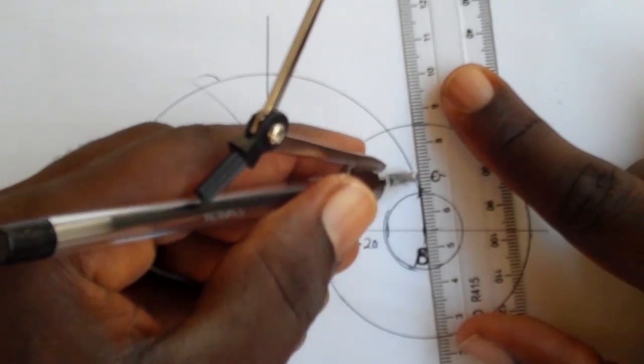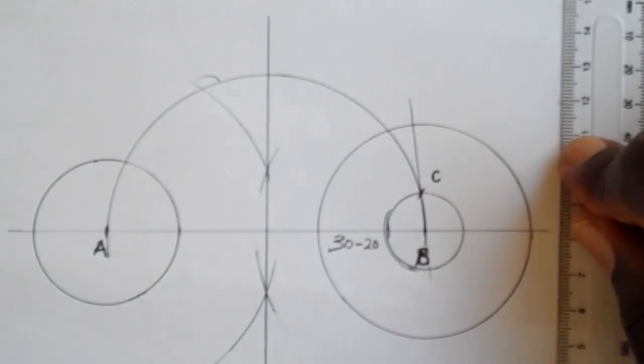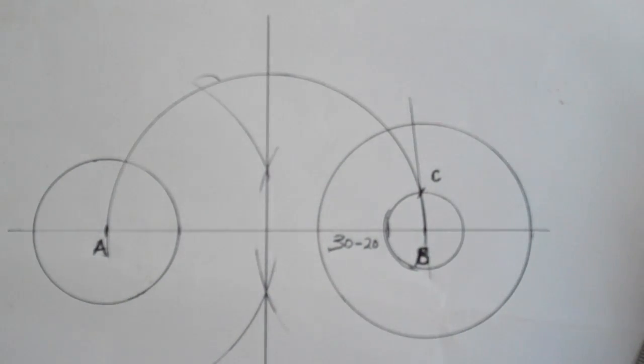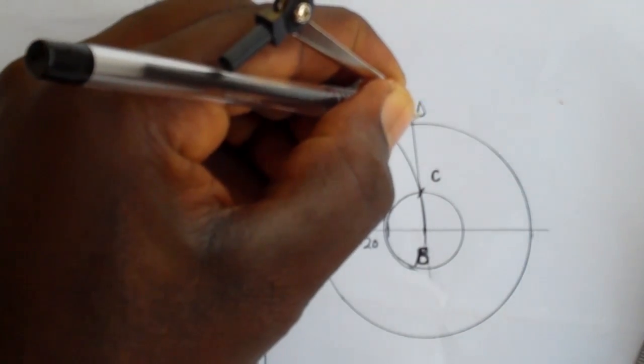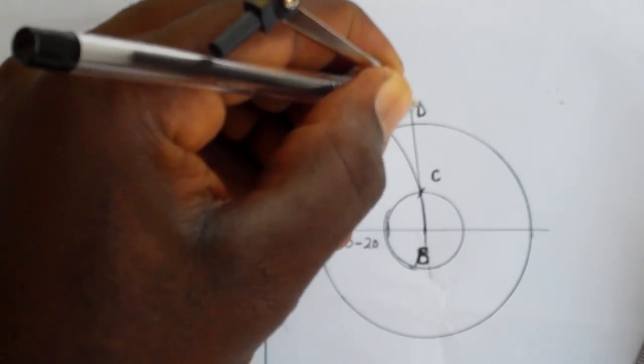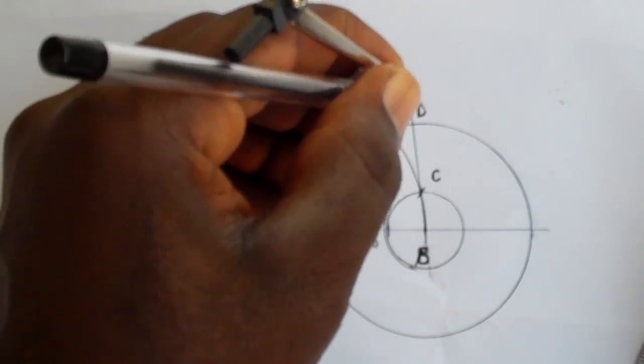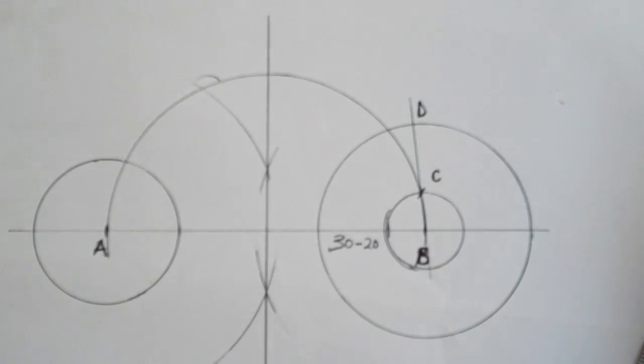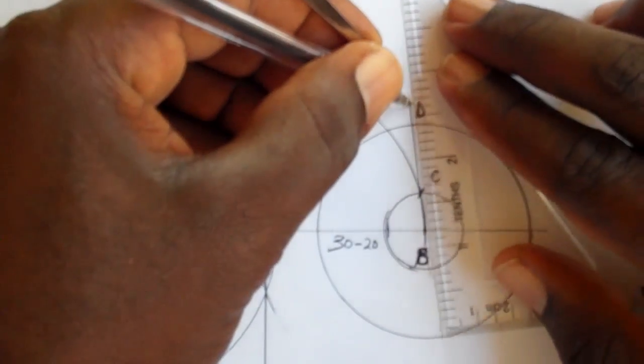You then draw a line from B to go through the point C. And this line that goes through C will touch the outer circle at a point I'm going to call D. Point D becomes our first point of tangency on that circle.